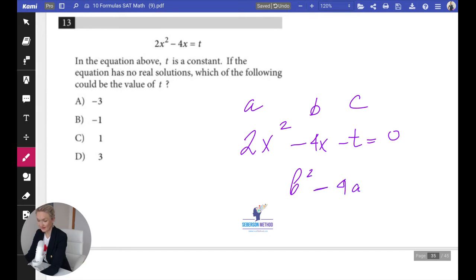Okay, so what's your b? Your b is negative 4, so 16, 4 squared, minus 4 times your a is 2, and times negative t.